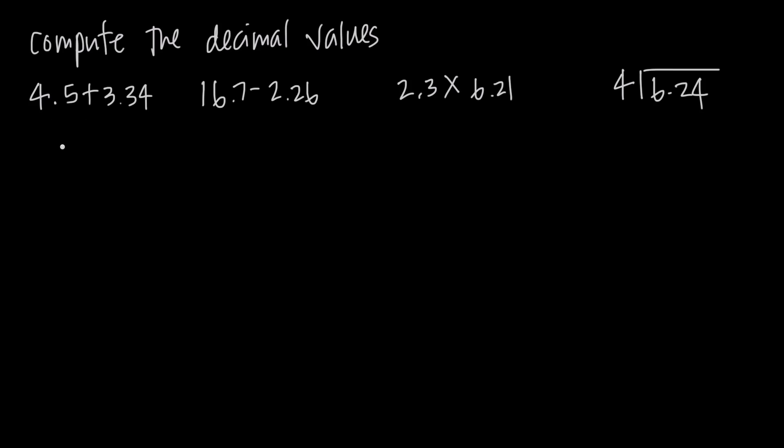So here we have 4.5, so we'll go ahead and put 4.5, and then we have 3.34. So we need to make sure that our decimal places line up. We wouldn't line up the 4 here with this 5 because then our decimals wouldn't line up. We need to make sure that the decimals line up vertically like this with each other.